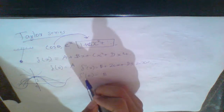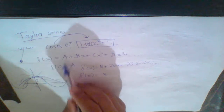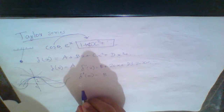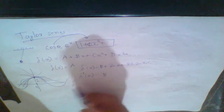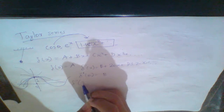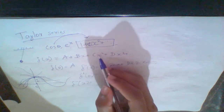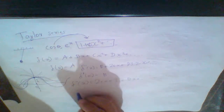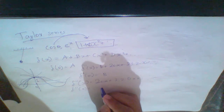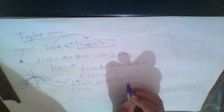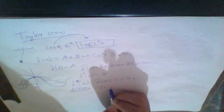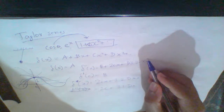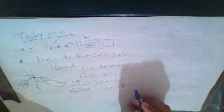If b is the derivative of f, then b is the first derivative of f. Now, c is the second derivative. The second derivative of f gives us 2c plus terms in x. Setting x to 0, the second derivative is 2c, and for higher terms: 3 into 2 into d times x.